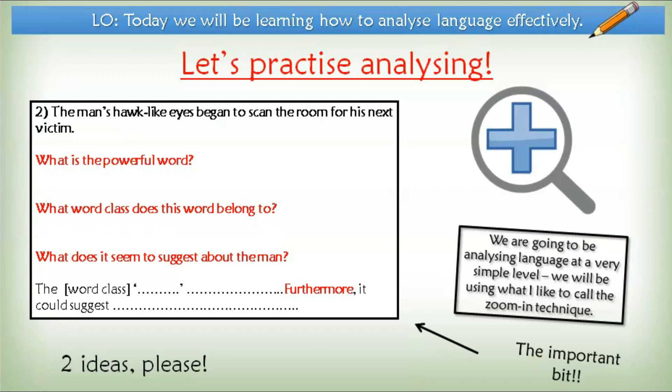So your sentence is: 'The man's hawk-like eyes began to scan the room for his next victim.' Identify the powerful word, write it down on your paper, identify what word class it belongs to, and tell me what it suggests about the man. Use the zoom-in technique and you can pause the video now. Hopefully you were able to identify a number of powerful words — you've got that adjective 'hawk-like', you've got that verb 'scan', and of course you've got that noun 'victim'. So let's go with that adjective 'hawk-like'.